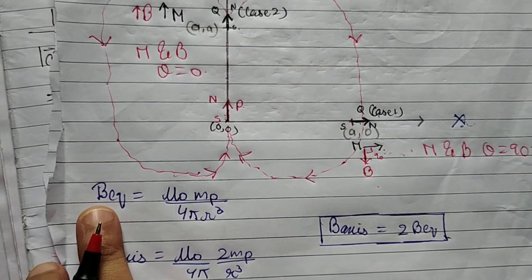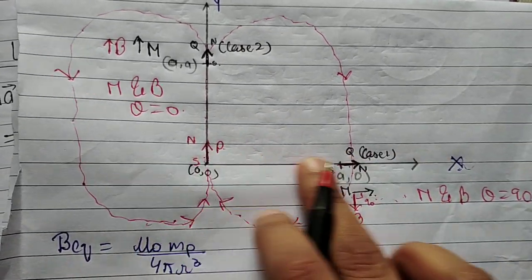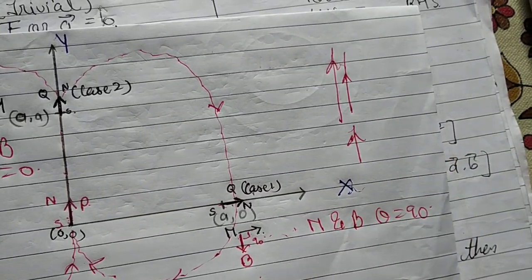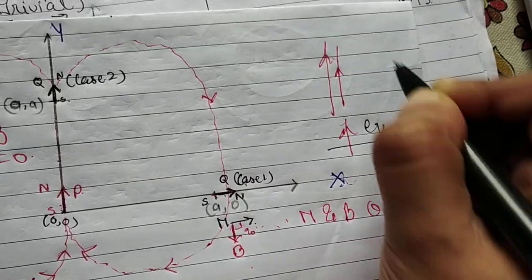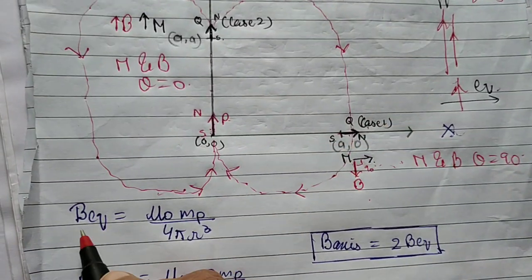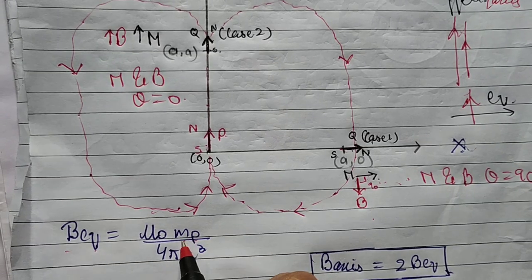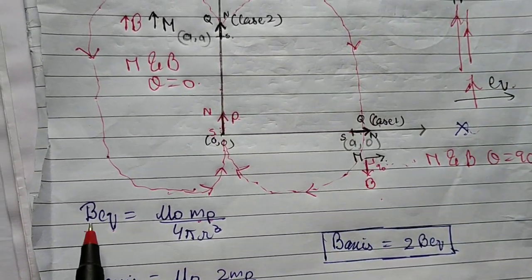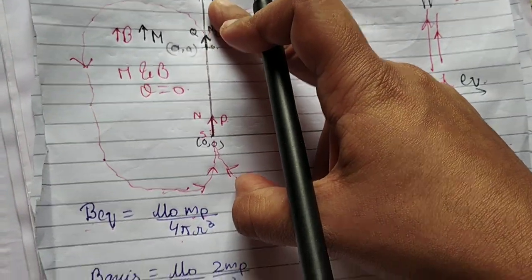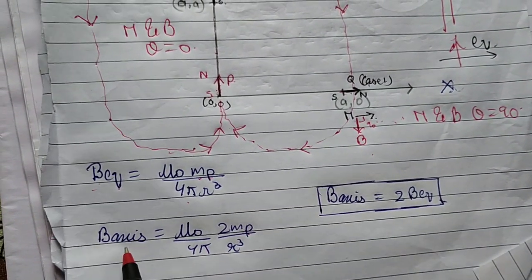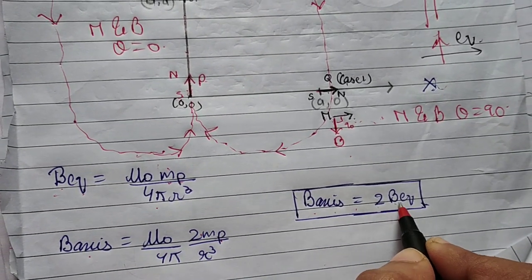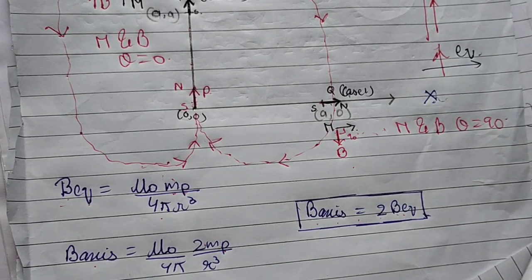We have studied equatorial position and axial position. Equatorial means this perpendicular position — the needle is placed perpendicular to the axis. The other position is the axial or parallel position, where the needle is along the axis. The equatorial magnetic field due to P is denoted by Mp, meaning the magnetic moment due to P, and Q is at the equatorial position.